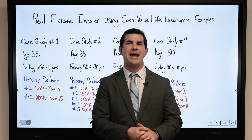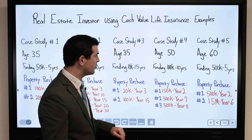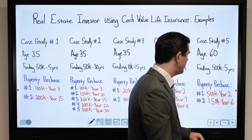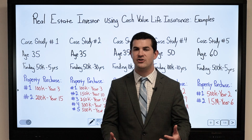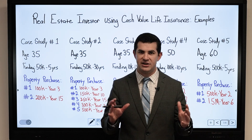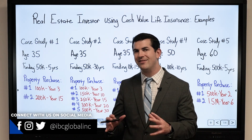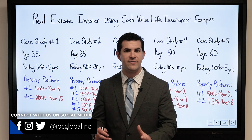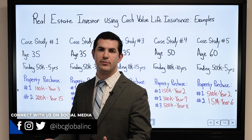Real estate investor case study number 5. We're going to look at a case of a 60-year-old individual that has some assets. He's got some cash that he wants to move into a policy, and the reason why is he's still investing in real estate. He's got some opportunities and likes the idea of getting money into a cash value life insurance policy — one for the death benefit, he's interested in the legacy planning.